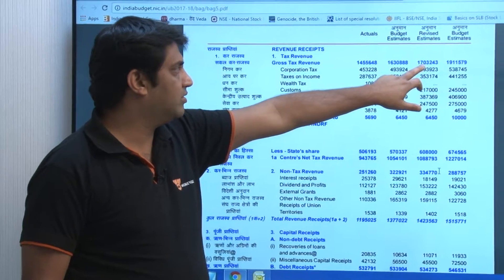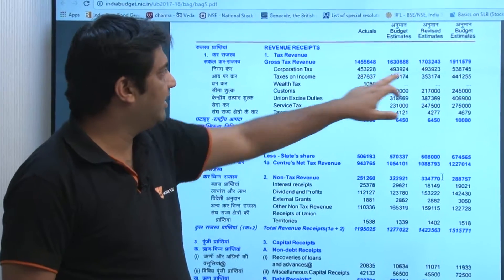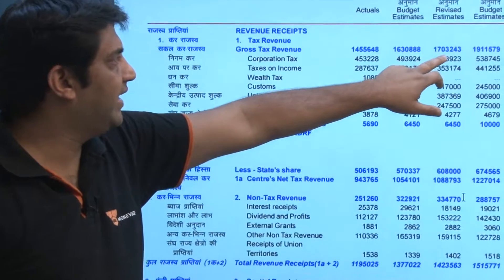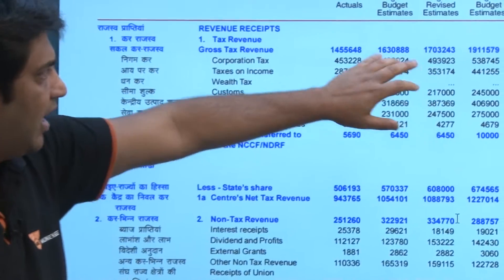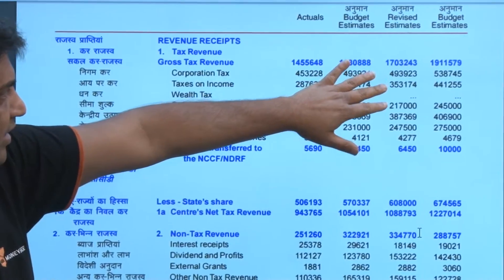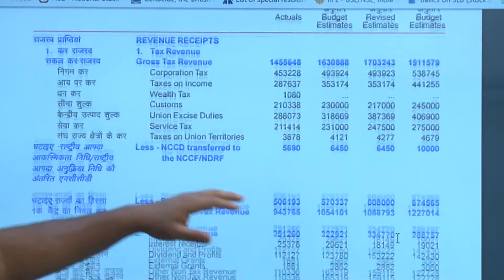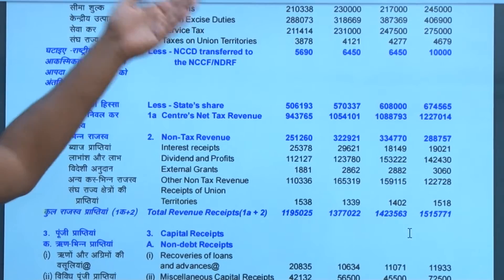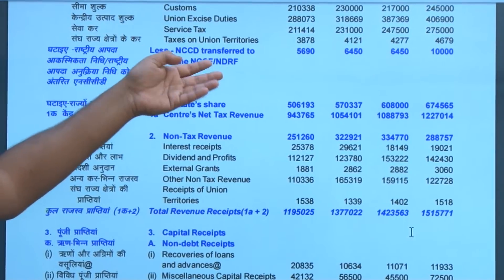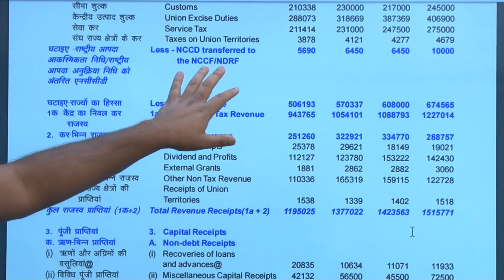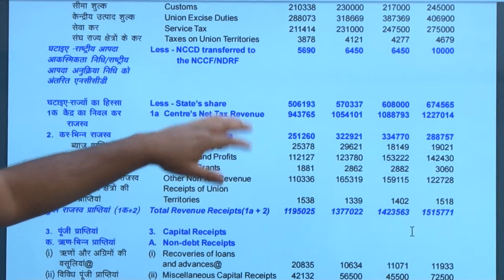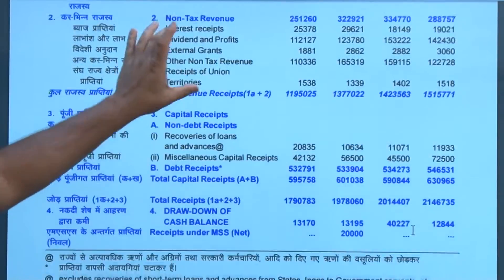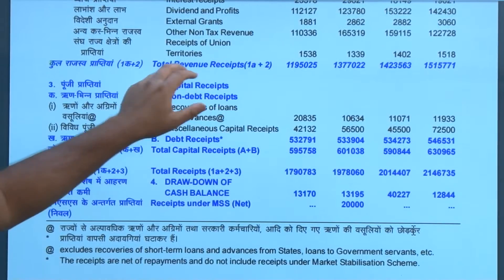The total amount was 17 lakh crores, out of which everything is distributed — you are giving to the union territories, you are giving to the disaster relief fund, you are giving to the state share and the non-tax revenue.